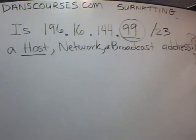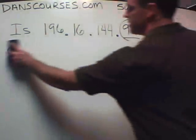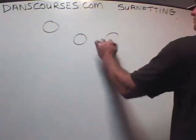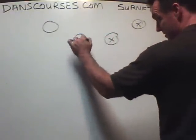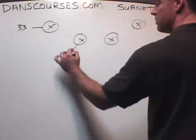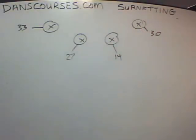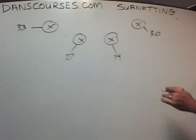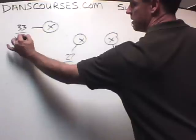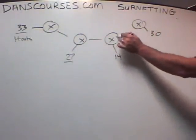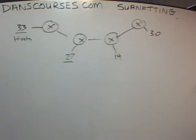You have three minutes and 47 seconds left. Here's another question we have to answer in subnetting. We've got four routers: this router needs 33 hosts, this one needs 27 hosts, this one needs 14 hosts, and this one needs 30 hosts. How do we subnet? What subnet mask will break up our networks into enough networks to accommodate this many hosts? That's a pretty easy answer if you think about the magic number.